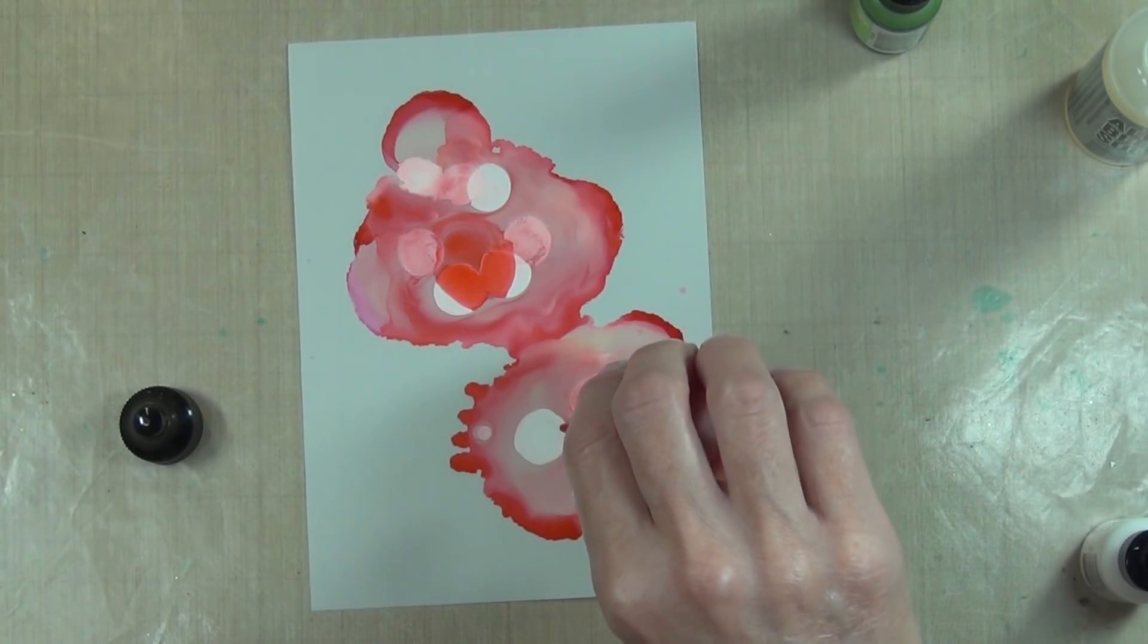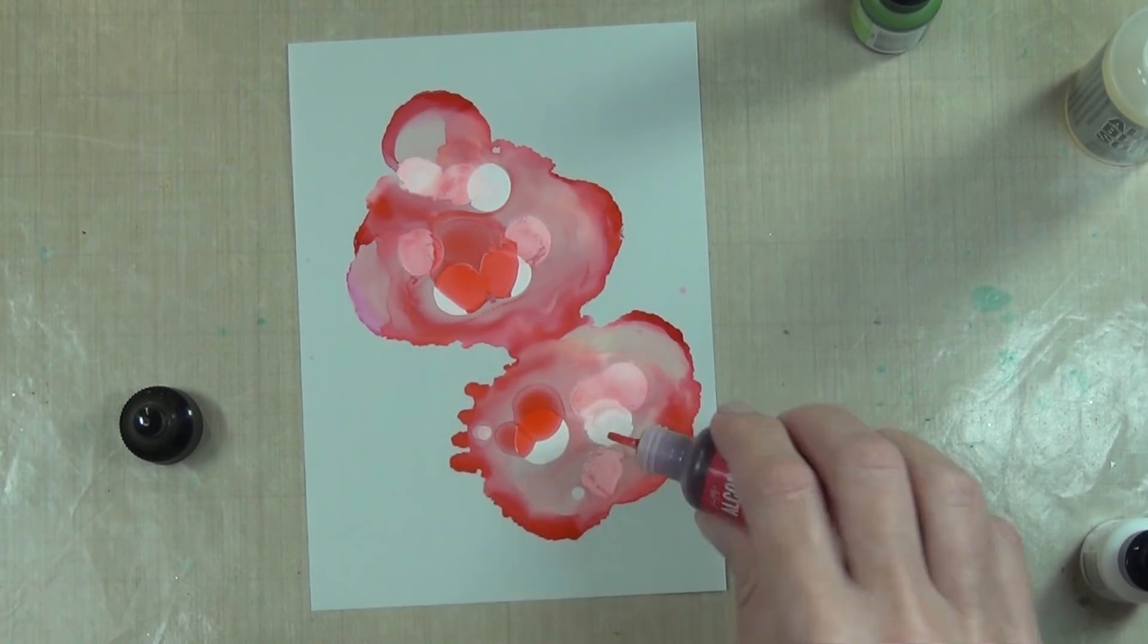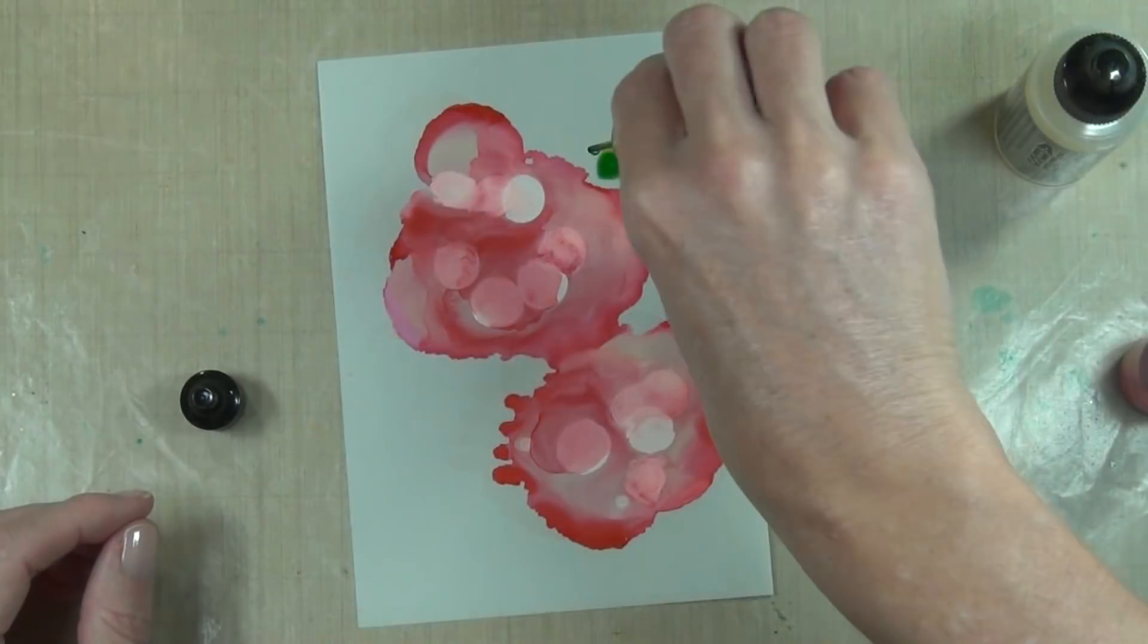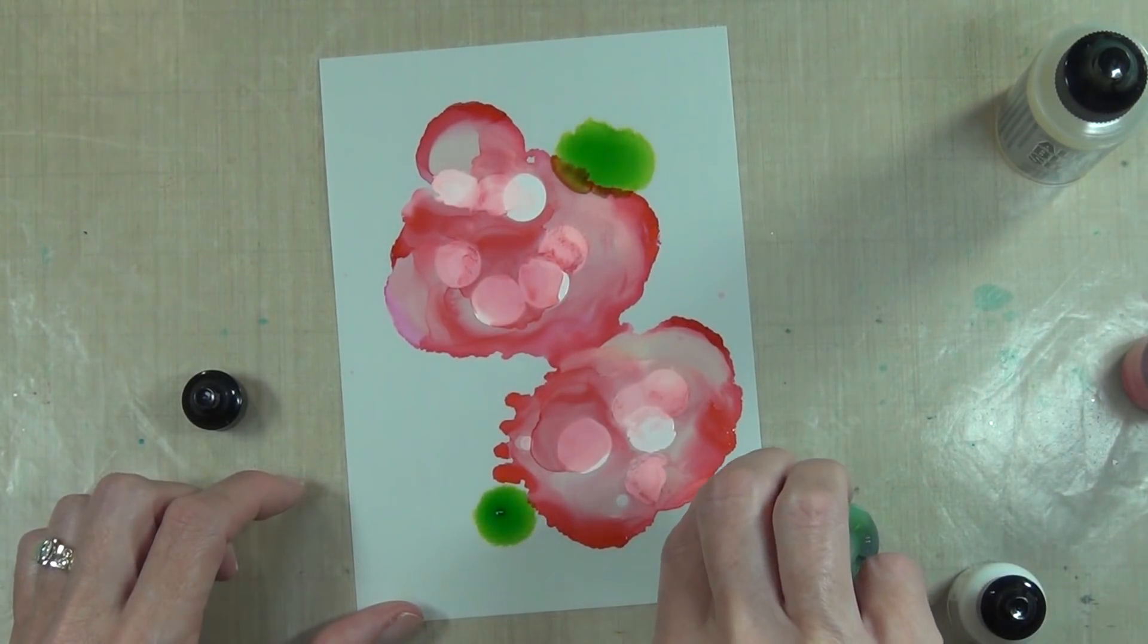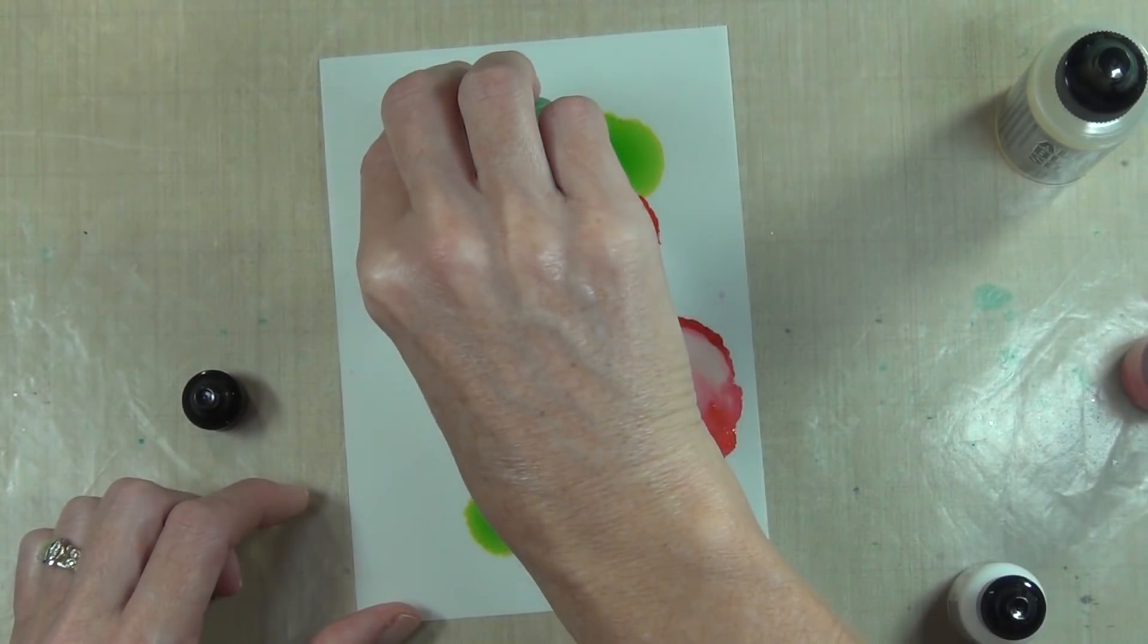Because I already know the shape of the flowers that I'm going to die cut with the Spellbinders Lovely Lilac, I've looked at the cardstock and I'm adding a couple of drops of green where I think the leaves are going to die cut.